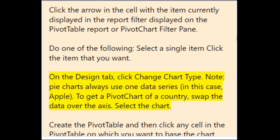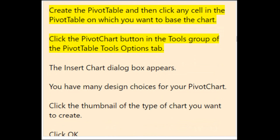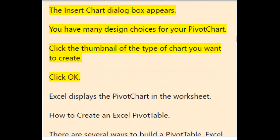On the Design tab, click Change Chart Type. Note that pie charts always use one data series. To get a pivot chart of a country, swap the data over the axis. Create the pivot table, then click any cell in it and click the PivotChart button in the Tools group of the PivotTable Tools Options tab. The Insert Chart dialog box appears — click the thumbnail of the chart type you want and click OK. Excel displays the pivot chart in the worksheet.